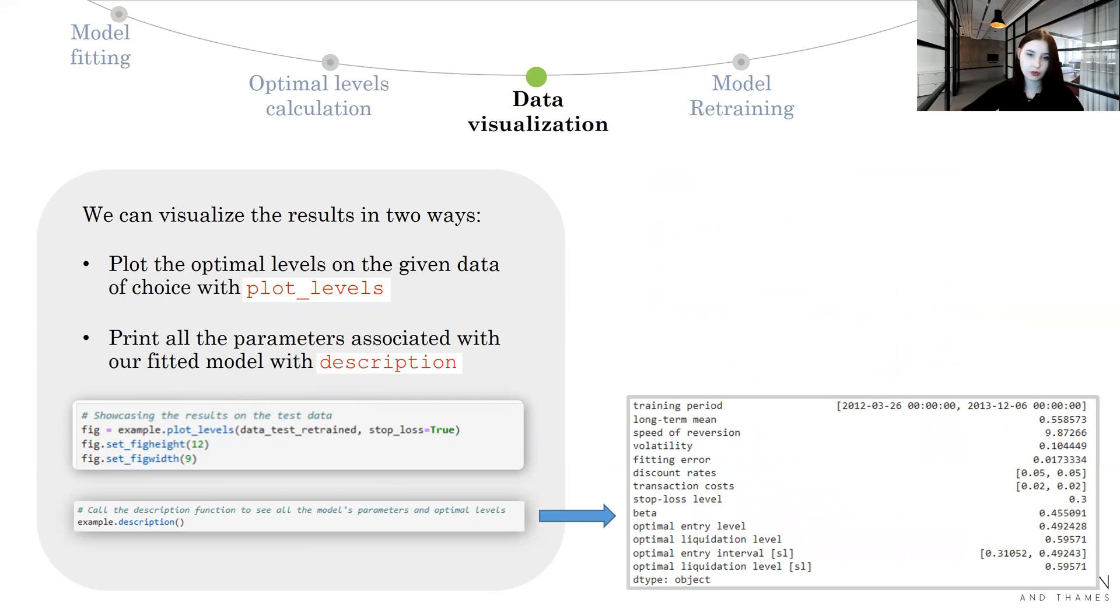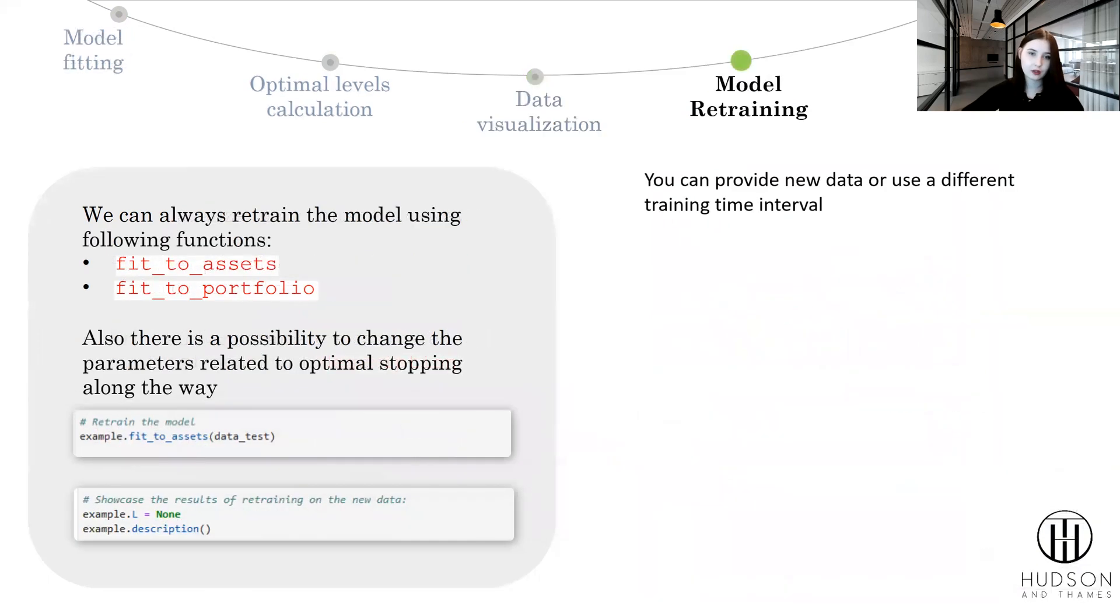You have your training period, all the parameters of the OU model, fitting error, and all the optimal levels mentioned in the description function output. The next possible step would be model retraining. You can always retrain the model using functions such as fit_to_assets and fit_to_portfolio. Also, there is a possibility to change the parameters related to the optimal stopping along the way.